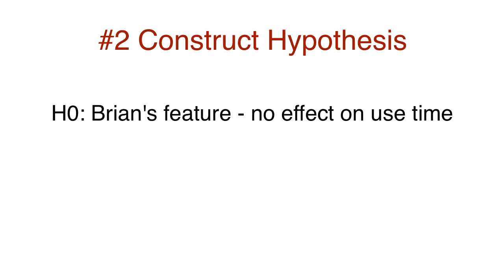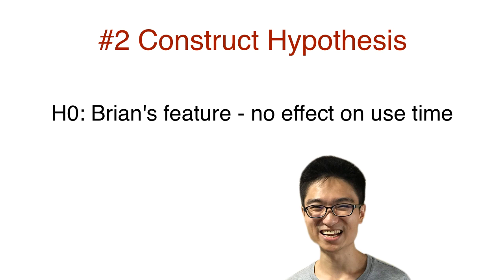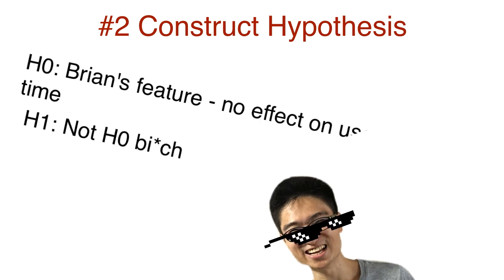Next, construct a hypothesis. The null hypothesis — the default position — would be that Brian's method doesn't affect use time. The alternate hypothesis would be that it does.